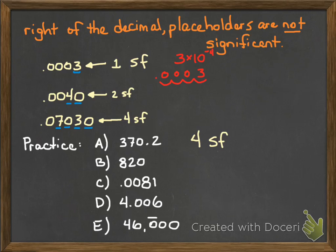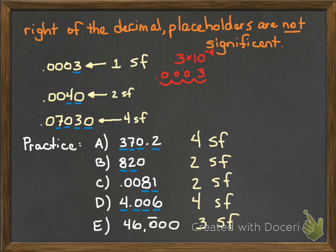We've got four sig figs for letter A. Of course the three, the seven, and the two are significant, and the zero is significant because it's bracketed. B has two sig figs — the eight and the two. The zero is a trailing zero to the left of the decimal point, so therefore it's not significant. Letter C has two sig figs: the eight and the one. The other two zeros are simply placeholders. Letter D has four sig figs. The four and the six on the ends are non-zero, therefore they're significant, and they bracket the middle zeros, which gives us four. And finally, letter E has three sig figs. The four and the six are significant because they're non-zero, and the zero with the line over it makes it significant.